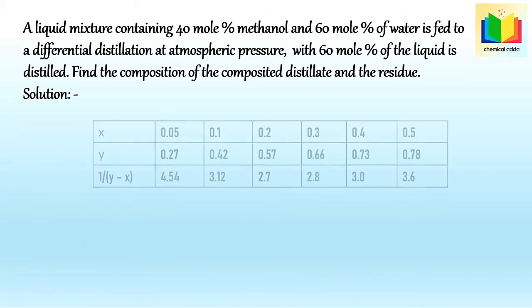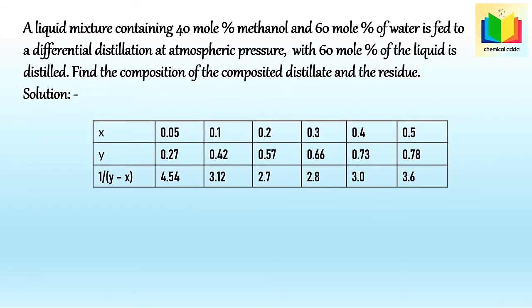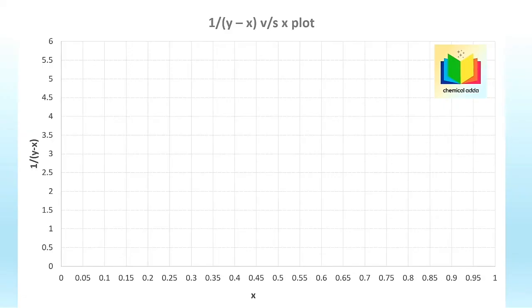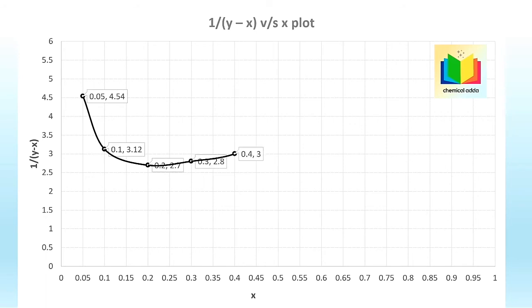In this problem, equilibrium data is provided. From the equilibrium table, we calculate 1/(y - x) for each data point. We then plot the graph with 1/(y - x) on the y-axis and x on the x-axis.